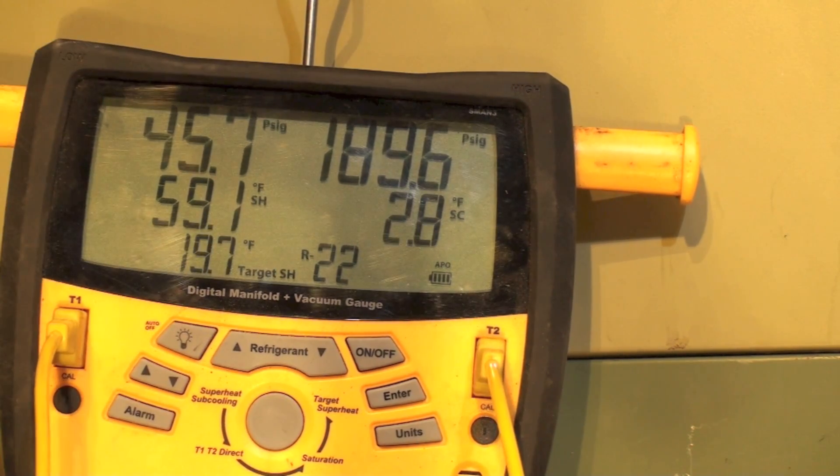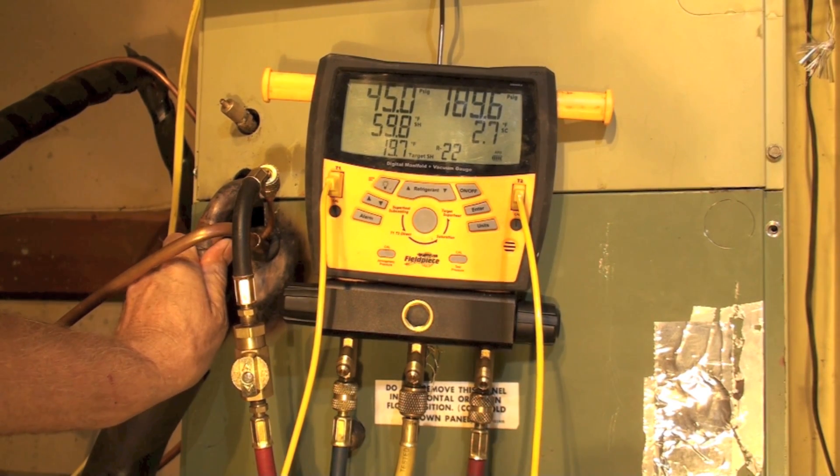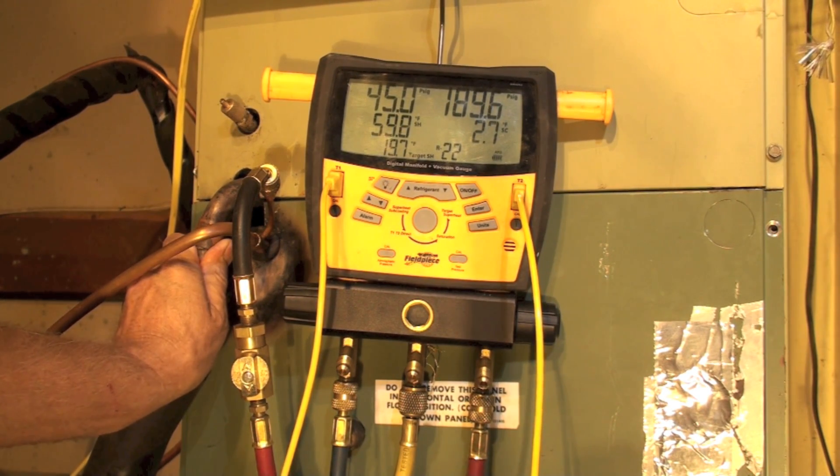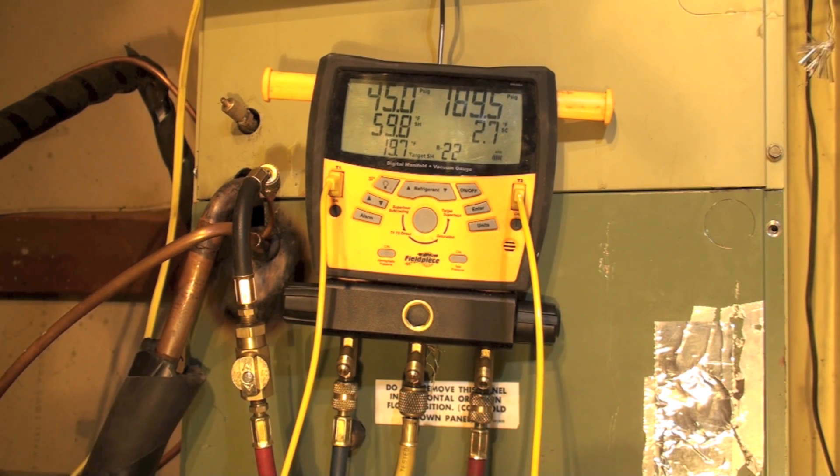Superheat's what's way out of whack here. Our target superheat for this wet bulb and dry bulb temperature is 19.7, so we're pretty far off. You can put your hand here on the suction line coming out of the evap and it's almost lukewarm. So we're going to start adding charge to this thing.